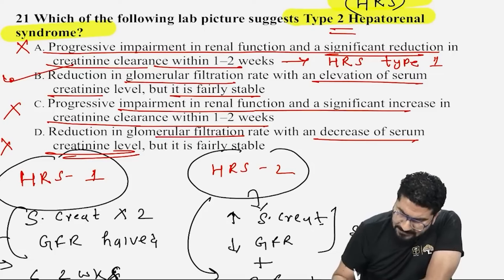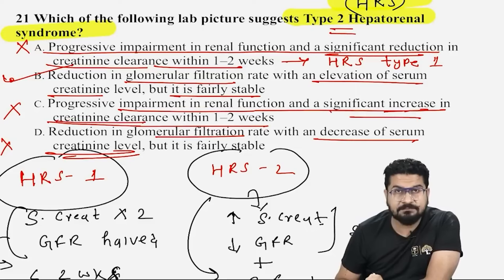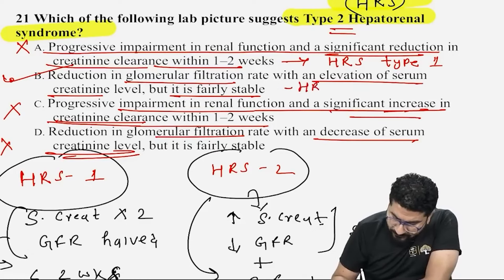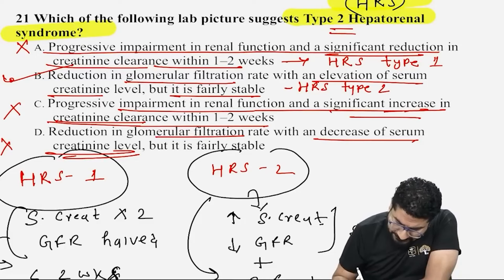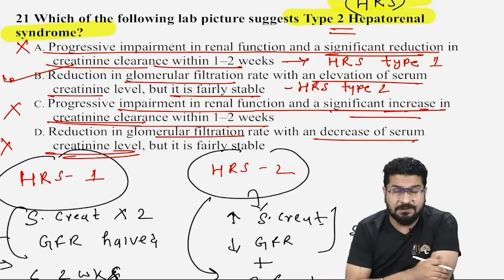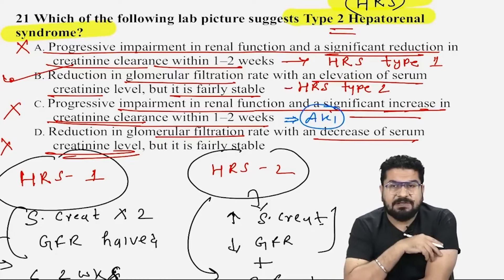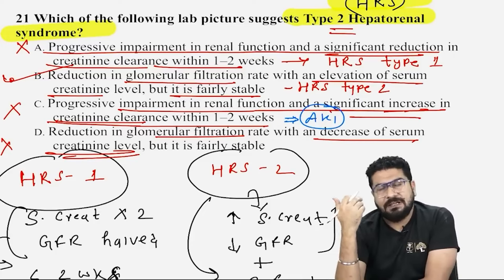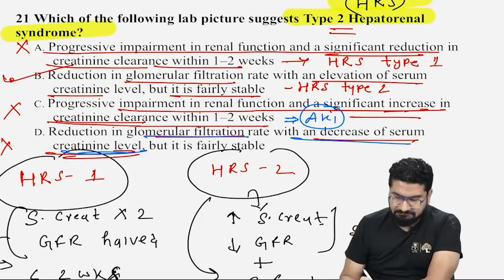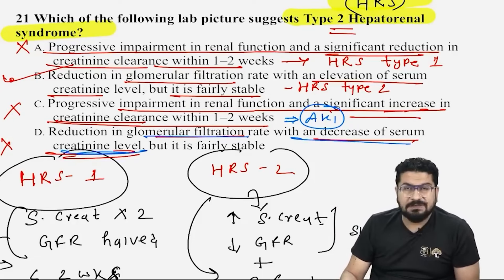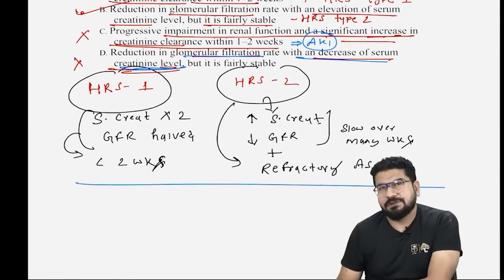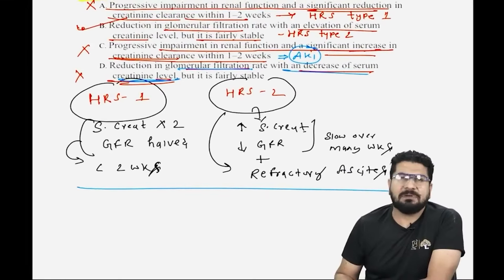AKI has certain phases — initiation phase and recovery phase. Reduction in GFR with decrease in creatinine levels is not seen anywhere since if GFR is reduced, creatinine increases. So this covers HRS type 1 and type 2. Keep working hard, keep revising — see you in the next video. Bye bye, take care.